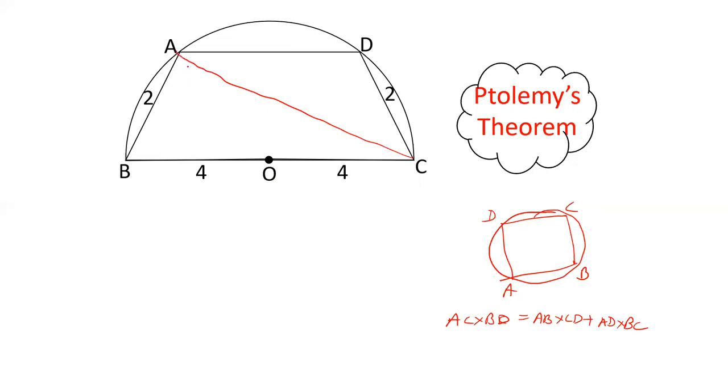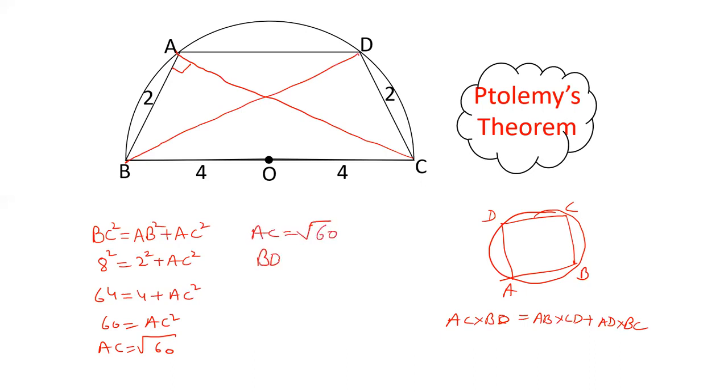If I join AC, this is a right-angle triangle. In the right-angle triangle, we can use Pythagoras theorem: BC² equals AB² plus AC². BC is 8 squared, AB is 2 squared, calculate AC square. 8² is 64, equals 4 plus AC². 64 minus 4 is 60 equals AC². So AC is √60. So BD is also √60. So AC has our value √60 and BD is √60.